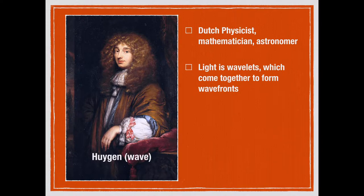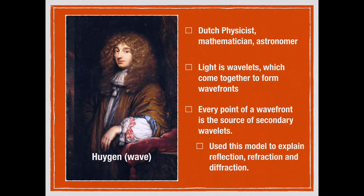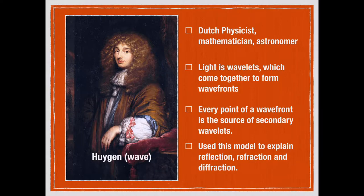He proposed that every point of a wavefront may be considered the source of secondary wavelets that spread out in all directions with a speed equal to the speed of the propagation of the wave. He used this model to explain reflection, refraction, and the diffraction of light.